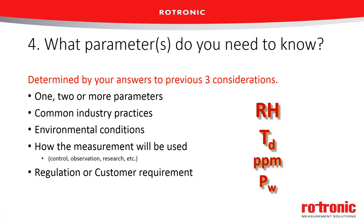Ask how many parameters you'll need to measure. Some instruments can measure multiple parameters at multiple points; others can only measure one or two. Consider whether getting one instrument with three sensors is better than three separate instruments. Also consider common industry practices — if you're in pharmaceutical or oil and gas, and you go to your annual convention, you need to be talking about the same parameter everyone else is discussing in order to compare notes. Your industry may determine what parameter you have to measure and report.